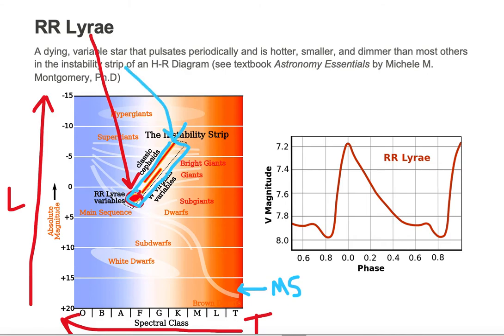The RR Lyras are dying variable stars that pulsate periodically. And they are hotter, smaller, and dimmer than most others in the instability strip.